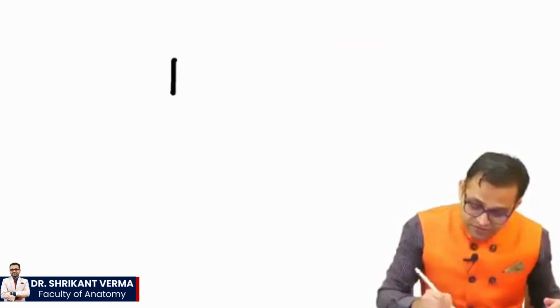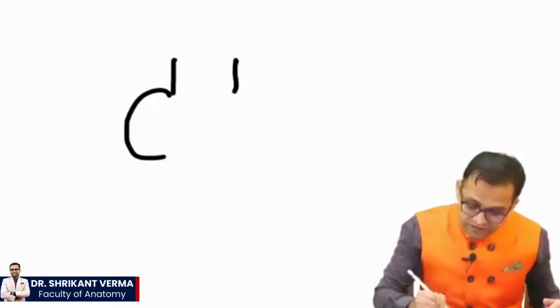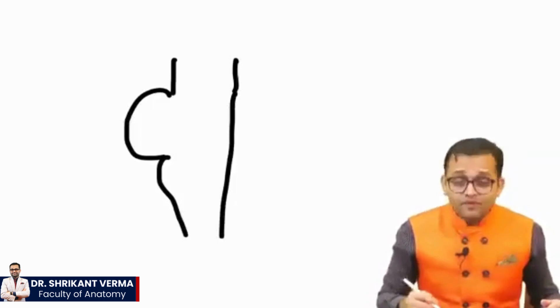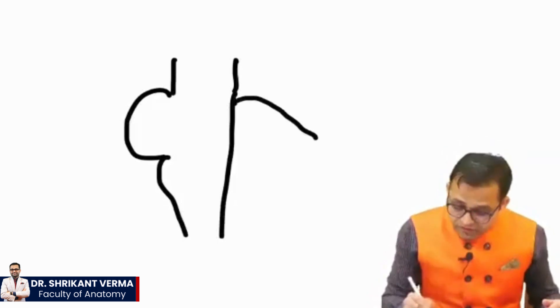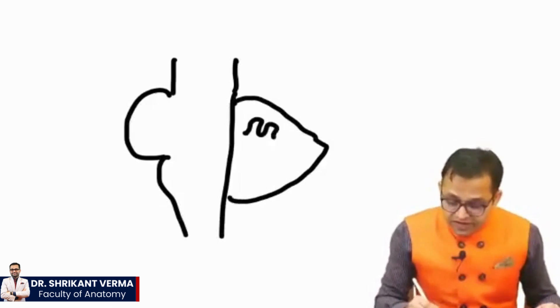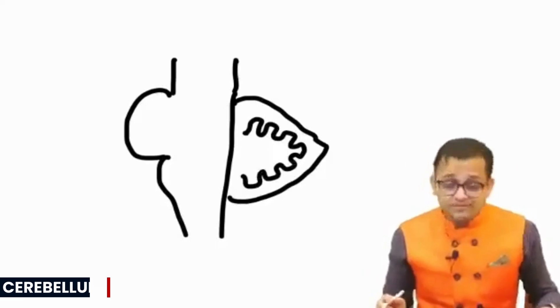There is one very important structure. Look here. Midbrain, pons, and this is the medulla. Just behind the pons and the medulla, there is a fern-like branching pattern structure. This is the cerebellum.